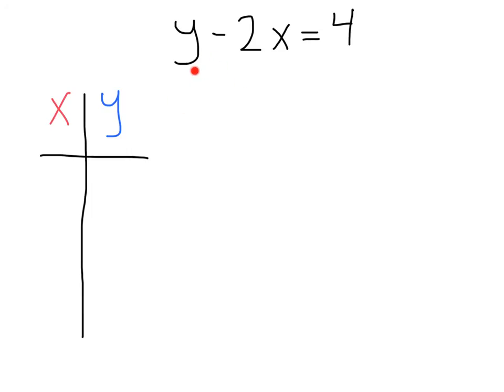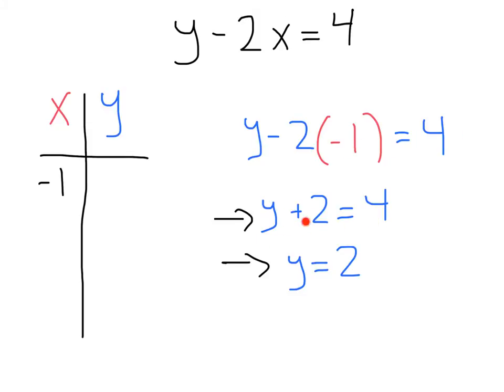Let's do one more quick example. We've got y minus two x equals four. We've drawn our xy table. Let's start with the x value negative one. Plugging negative one in for x, we're going to get y minus two times negative one equals four. That gives us y plus two equals four. And solving by subtracting two from both sides, we get y equals two.